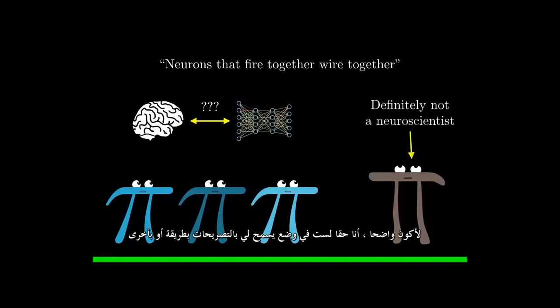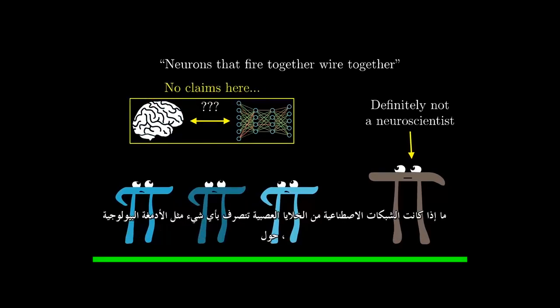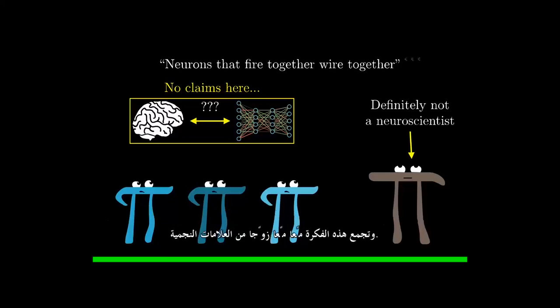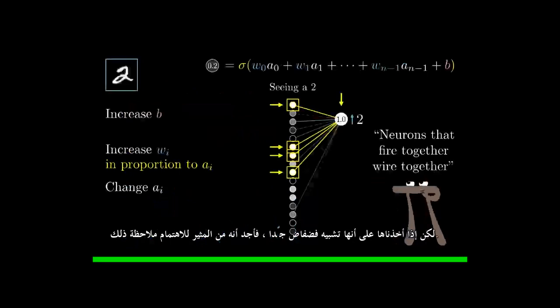To be clear, I really am not in a position to make statements one way or another about whether artificial networks of neurons behave anything like biological brains, and this fires-together-wire-together idea comes with a couple meaningful asterisks, but taken as a very loose analogy, I do find it interesting to note.